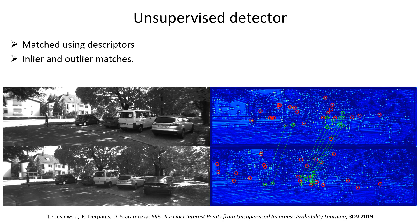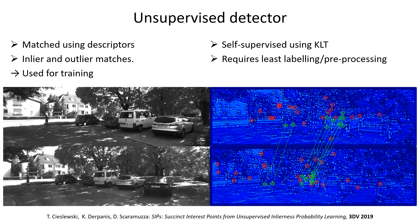Whether or not a match is an inlier can be determined using correspondence labels or geometric verification. Outliers are shown in red. Whether an interest point results in an inlier or outlier is also what we use for training the network. This can be done in a self-supervised manner using Lucas-Kanade tracking. Thusly, our method requires the least amount of data labeling and preprocessing to date, needing nothing more than uncalibrated image sequences.